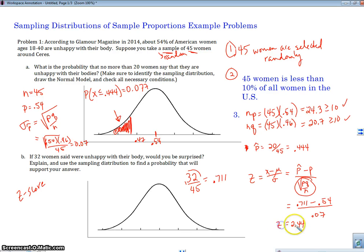So if our Z-score is 2.44, what does that tell us? That tells us 32 women would be 2.44 standard deviations above what we would really expect the mean to be. So that is, in fact, surprising. All right. So that's it for sample proportions. In the next video, I'll take a look at the sampling distribution of sample means. See you later.